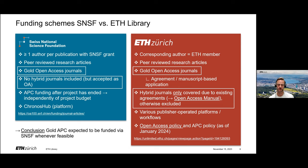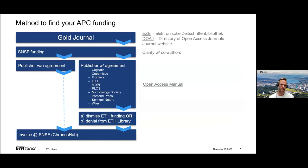But what does this mean for you as an author? How does it work to distinguish who is going to pay the APC for your research papers? On this slide, I present a method which works like a flowchart with checkboxes. First of all, you have to distinguish between gold or hybrid journals, since the SNSF does not fund hybrid journals at all.